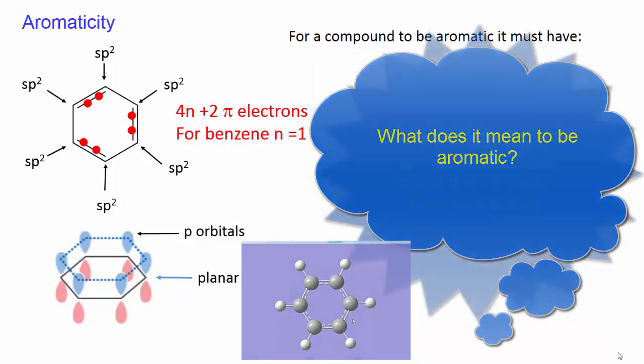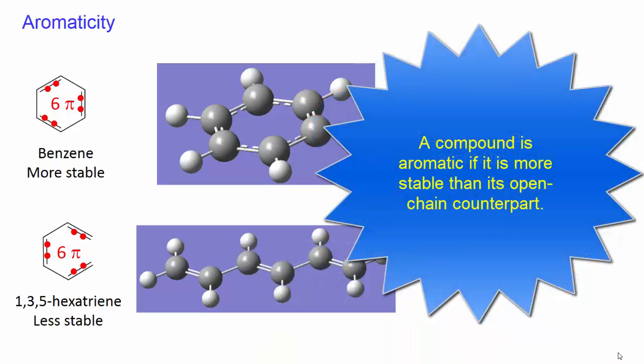What does it mean to be aromatic? A compound is aromatic if it is more stable than its open chain counterpart.